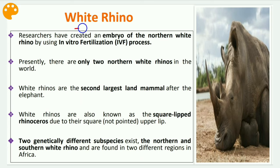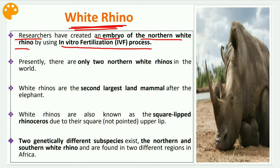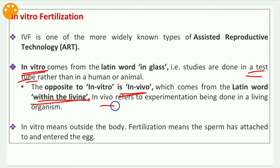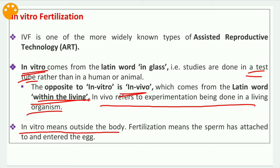The next issue is the white rhino. Researchers have created an embryo of the Northern white rhino using in vitro fertilization. In vitro fertilization means the egg is fertilized with sperm in a test tube — outside the body — whereas in vivo fertilization takes place within a living organism. Presently there are only two Northern white rhinos in the world.